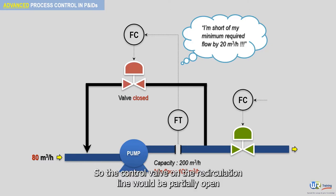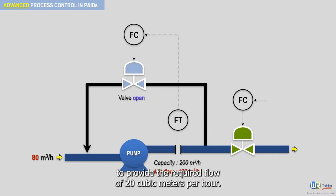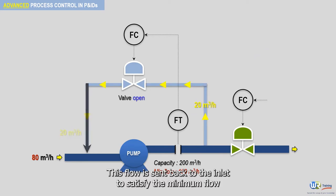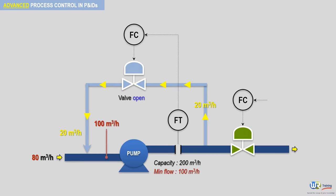So the control valve on the recirculation line would be partially open to provide the required flow of 20 cubic meters per hour. This flow is sent back to the inlet to satisfy the minimum flow condition of 100 cubic meters per hour and thus prevent damage to the pump.